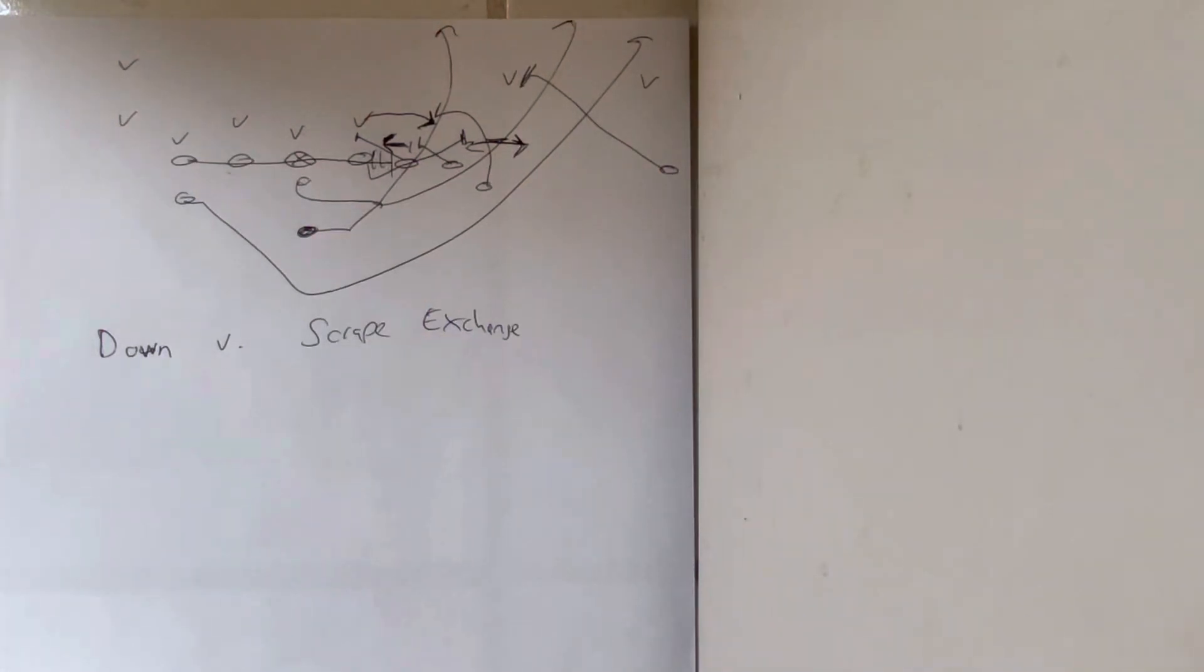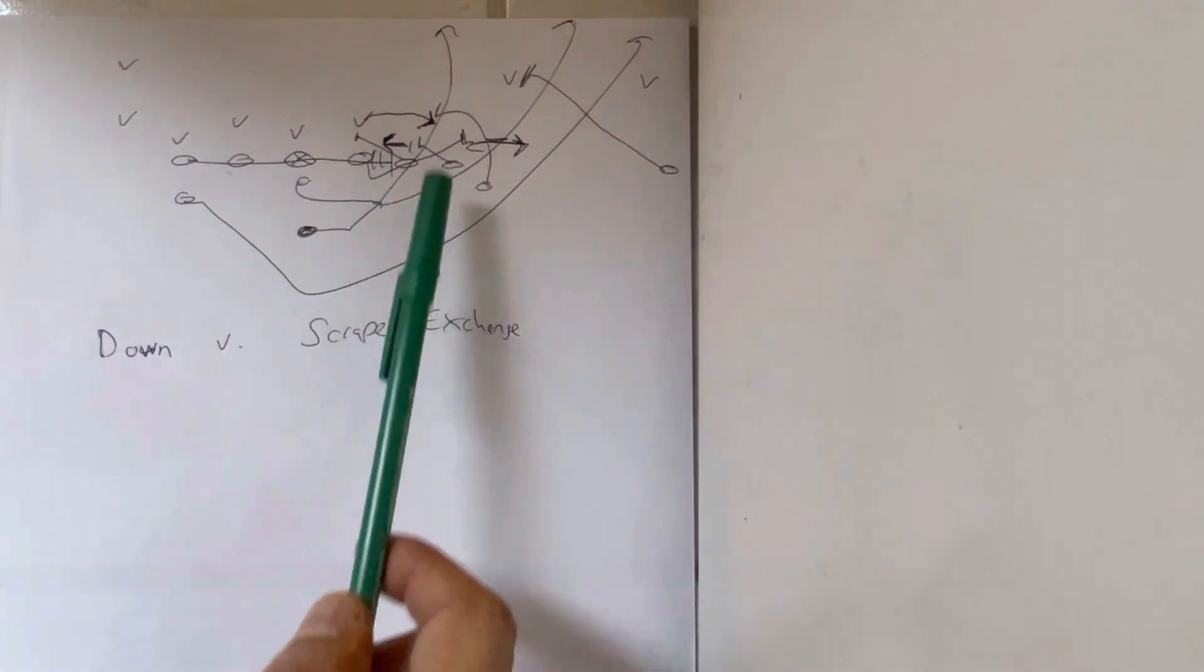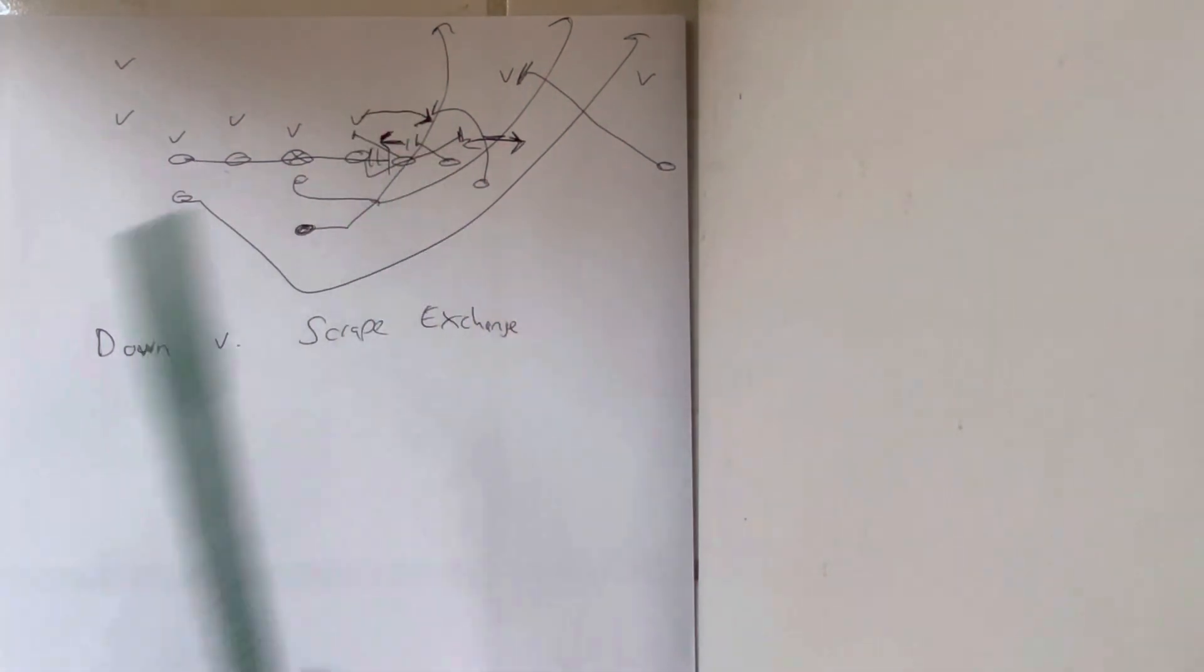Roger Sella here, and we're going to make this quick video on beating the scrape exchange, which is when number one takes the B-back and then they run the Mike linebacker basically where number one was. That's called a scrape exchange.